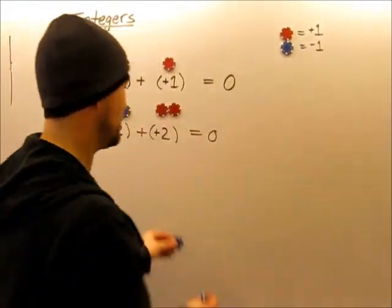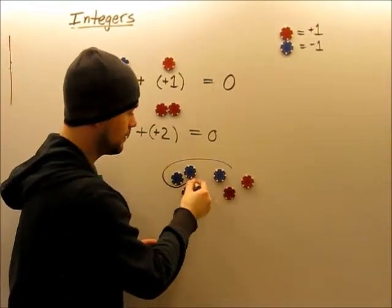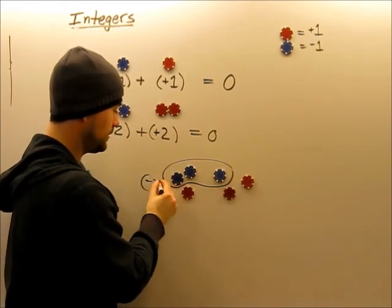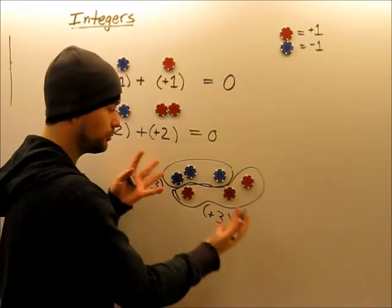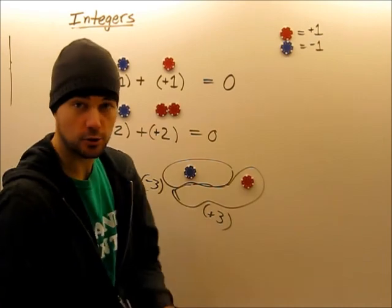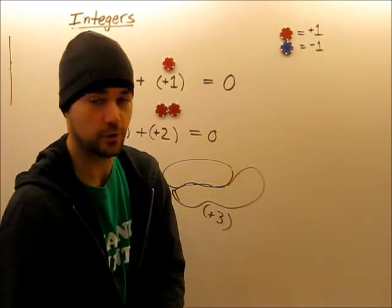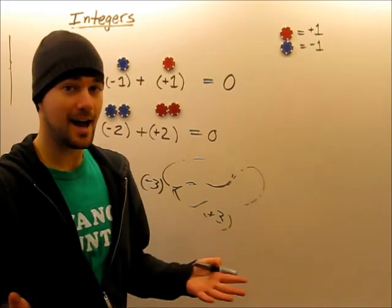So all we have to remember is that if you're combining a positive and a negative counter, the net value of them, the net value of the negative and the positive together is zero. If I had ten red ones and ten blue ones, the net value of those would be zero again. Exactly zero. So we can show the number zero in many different ways. Here's another way. Watch this.